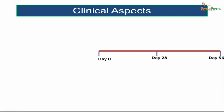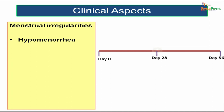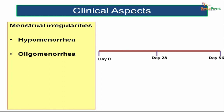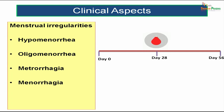Before moving on to the topic proper, let us discuss some clinical aspects. We know about menstrual irregularities: hypomenorrhea is scanty blood flow during regular periods; oligomenorrhea is blood flow occurring after 30 to 35 days; metrorrhagia is intermittent bleeding before the onset of the next period; menorrhagia is tremendous blood flow during regular periods; and amenorrhea is the absence of normal blood flow. To understand these irregularities, you need a clear idea about the female reproductive cycle.